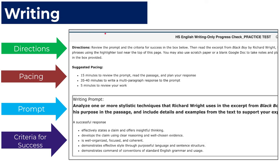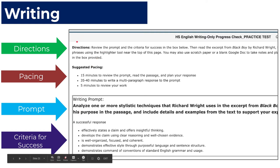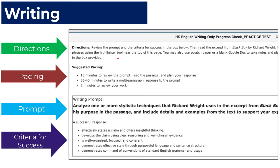Your test is a writing prompt — there's no multiple choice. There is a format to it: the first thing at the top will be your directions, which you want to make sure you read. Then they give you suggested pacing, where they say it should take you about 15 minutes to do this section and 35 to 45 minutes to do this other section.